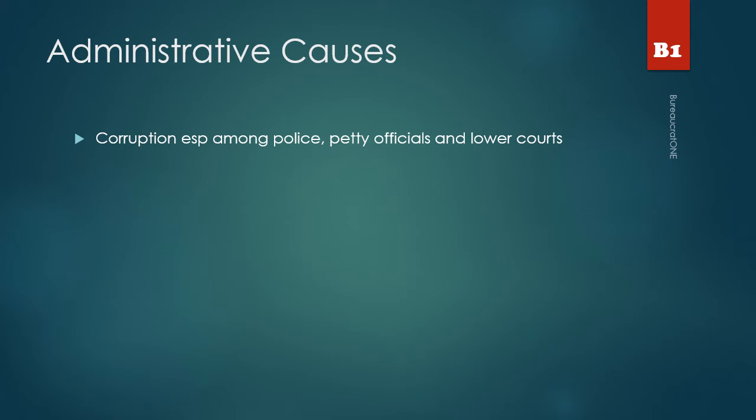Administrative causes that led to the revolt of 1857: there was a high level of corruption among police and petty officials in the lower courts, which caused people to revolt against the government.